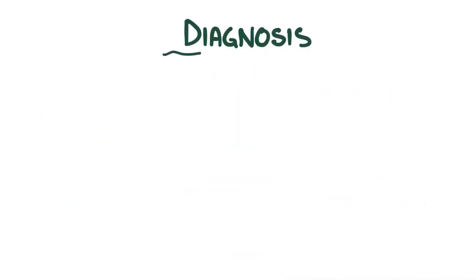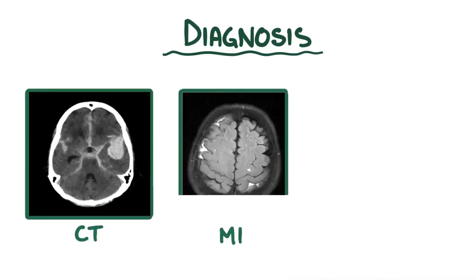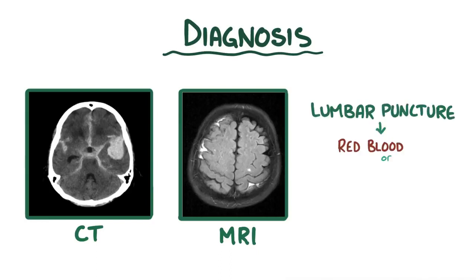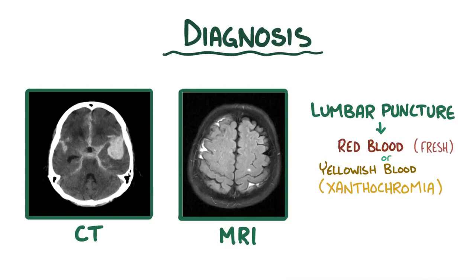The diagnosis of a subarachnoid hemorrhage is usually made with a CT or MRI scan, which typically shows blood pooling in the subarachnoid space around the damaged artery. Classically, a lumbar puncture will show red blood cells, or yellowness from bilirubin called xanthochromia — because there may be fresh blood around the spinal canal, or old blood that is being metabolized and broken down.